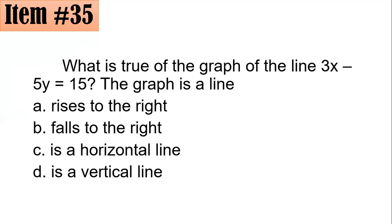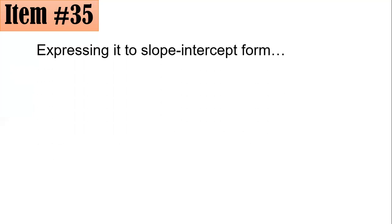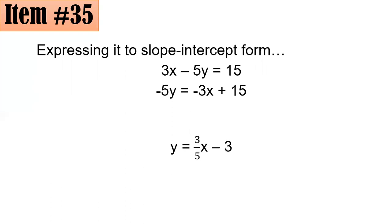Item 35: What is true of the graph of the line 3x minus 5y equals 15 — does it rise to the right, fall to the right, or is it horizontal or vertical? To find the slope, express the equation in slope-intercept form. Subtracting 3x from both sides: negative 5y equals negative 3x plus 15. Dividing each term by negative 5 gives y equals three-fifths x minus 3.